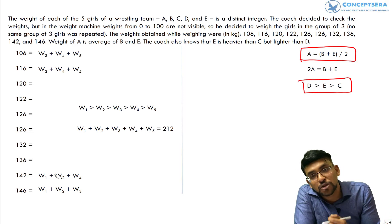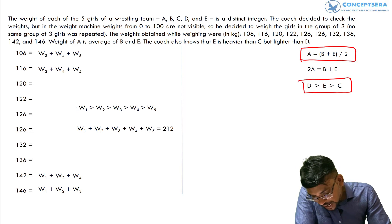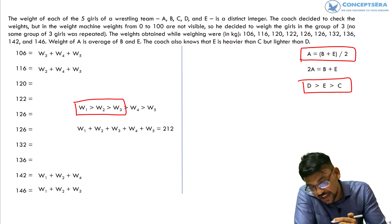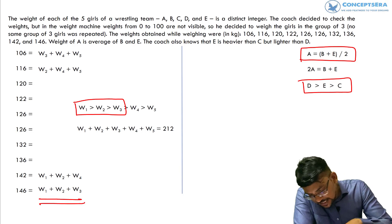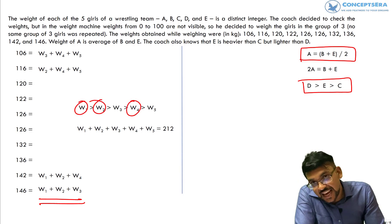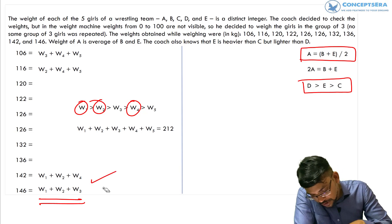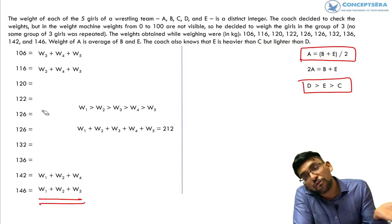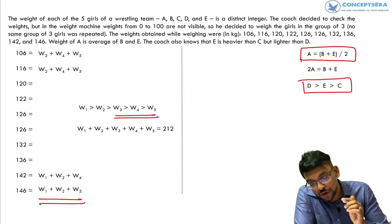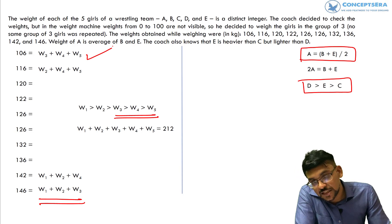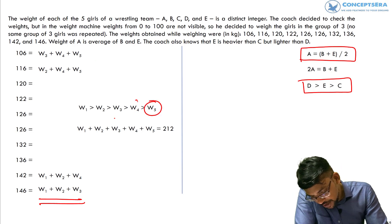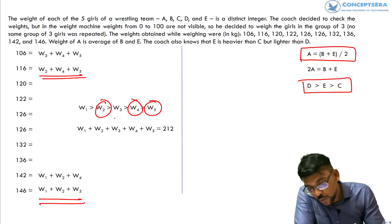If we look for the group of three with the heaviest total weight, the heaviest three are W1, W2, W3 — and adding these gives 146. The second heaviest group is W1 + W2 + W4, which equals 142. For the lightest group, we add the three lightest: W3 + W4 + W5 = 106. The second lightest group is W2 + W4 + W5 = 116.